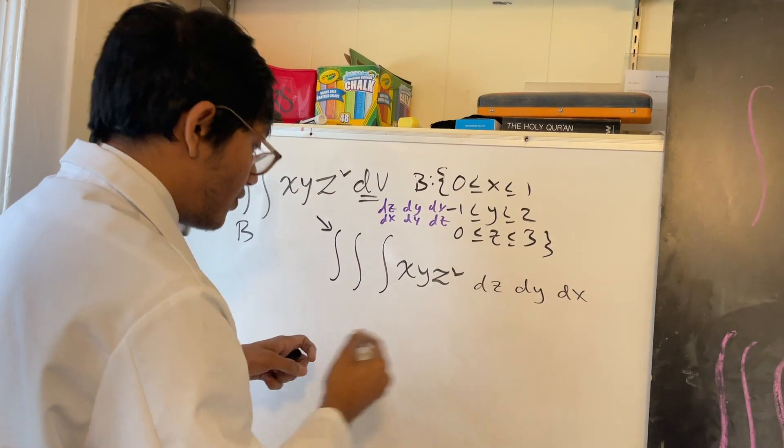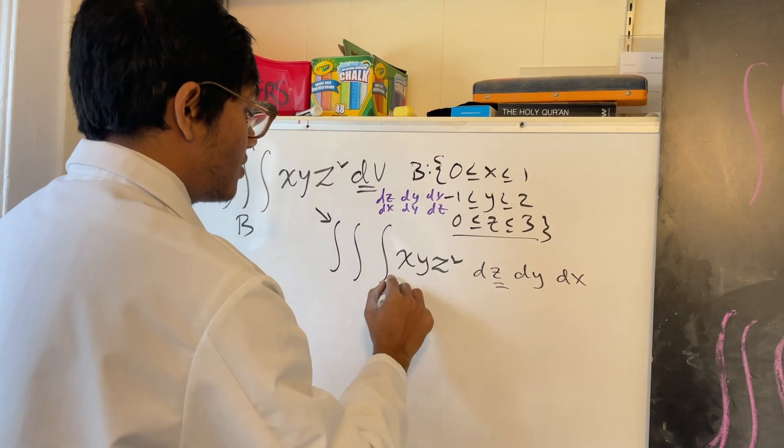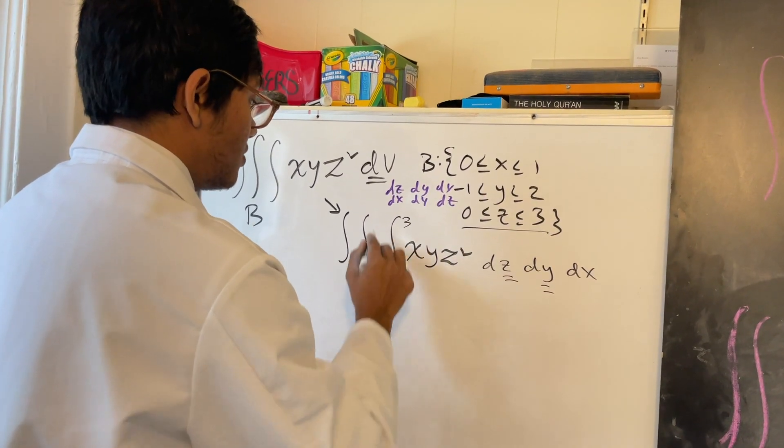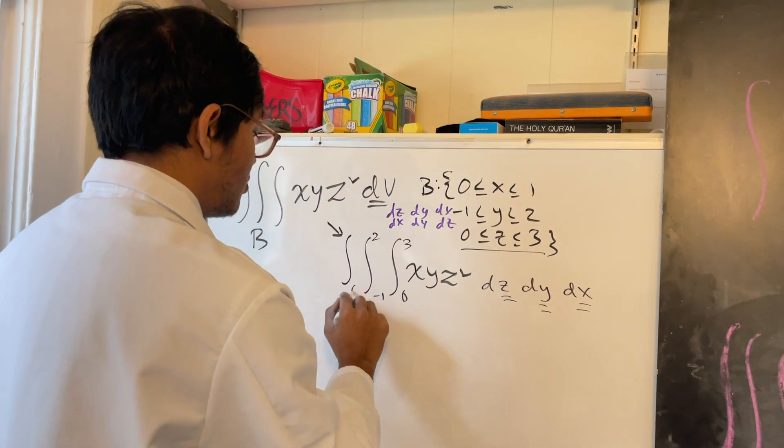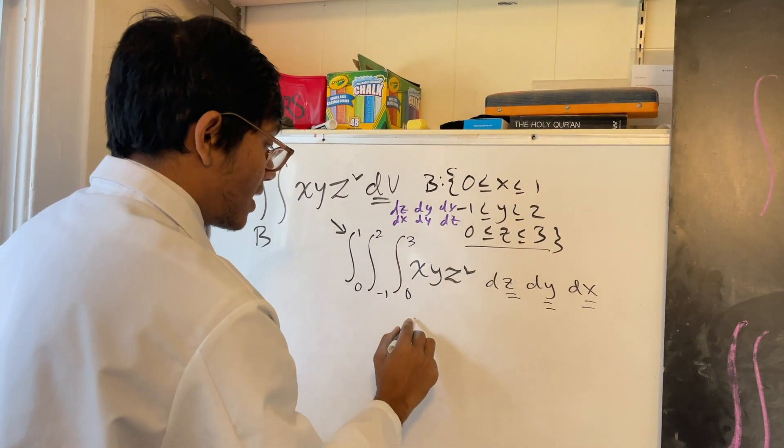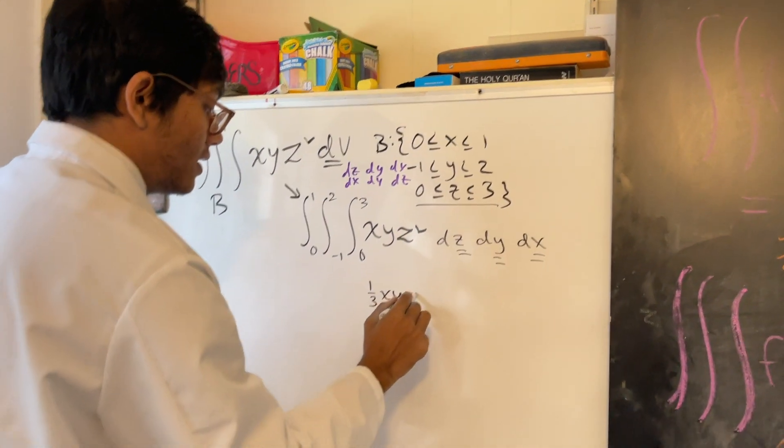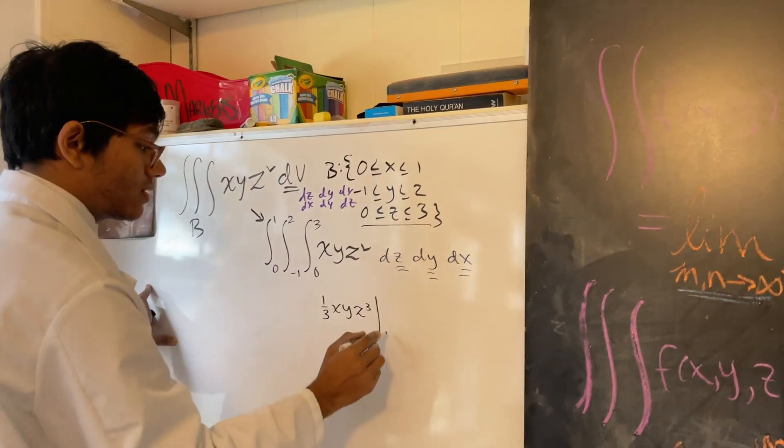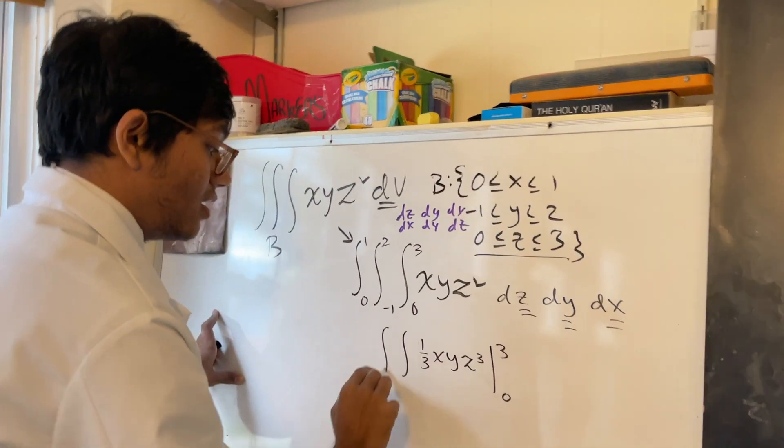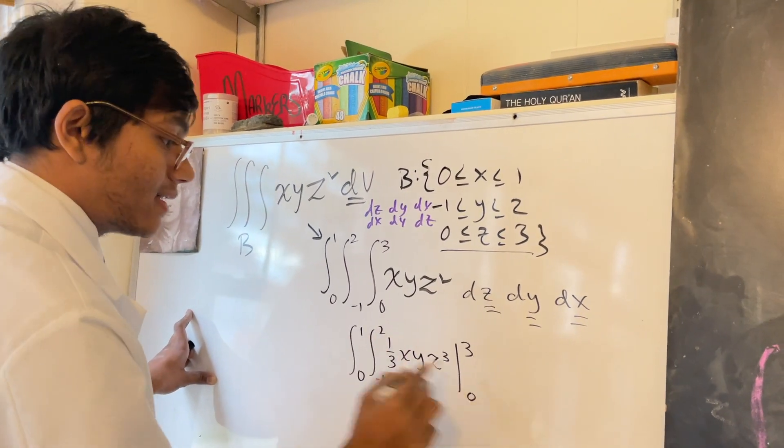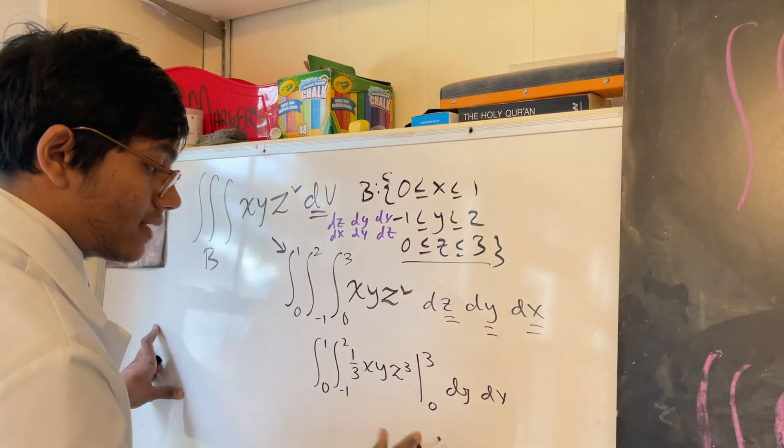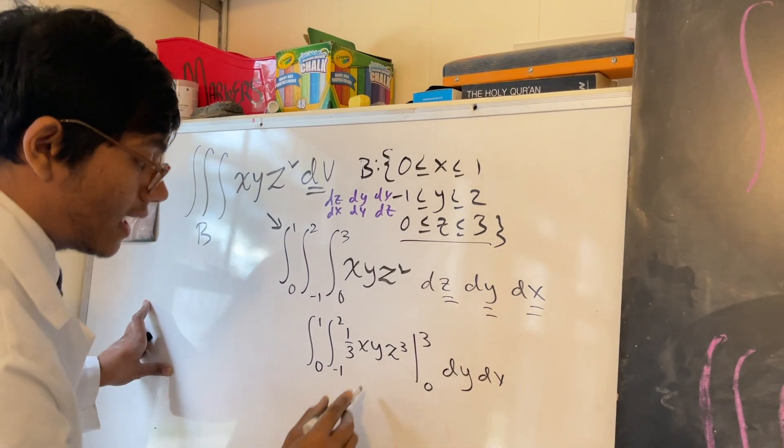The limits of integration for z is between 0 and 3, for y is between -1 and 2, and for x is between 0 and 1. So if I do z, I'm going to have one-third XYZ³ from z=0 to 3, and I'm going to have two more integrals on the outside. Don't forget about them. They're going to be dy and dx.